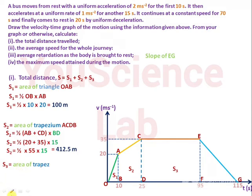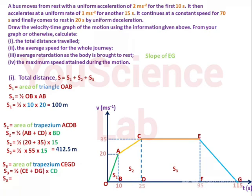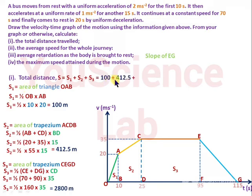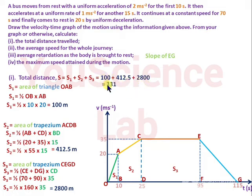S3 is the area of trapezium CEGD, equal to half times (CE plus DG) times CD. That is half times (70 plus 90) times 35, which equals half times 160 times 35, giving 2800 meters. The total distance is therefore 100 plus 412.5 plus 2800, which equals 3312.5 meters.